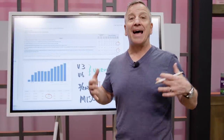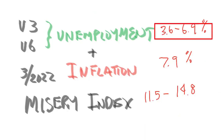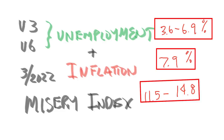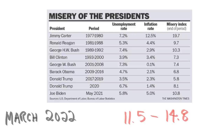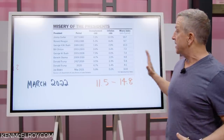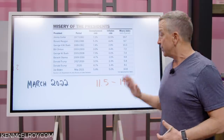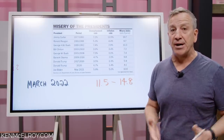For purposes of our misery index, we're going to look at two ranges: 3.6% plus 7.9% inflation, and 6.9% plus 7.9%. We come up with a misery index of 11.5 to 14.8 under the current administration. Here's a summary of what's happening in March 2022 compared with other presidents in history. These numbers do affect elections and we have a midterm coming up, so who we vote for in our individual states and federally is very important.